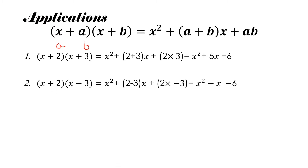The next example is also of the form (x + a)(x + b), where a is 2 but b is minus 3. The first term is x square, then we add the constants: 2 plus (minus 3) into x, and then ab is 2 into minus 3. That gives 2 minus 3 equals minus 1 for the middle coefficient, and minus 6 for the last term. So the answer is x square minus x minus 6.